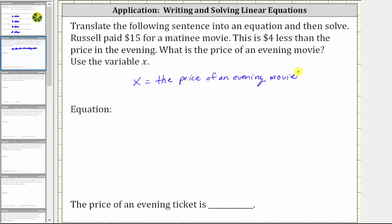Now we want to write an equation that relates the price in the evening to the price of the matinee. Because the price of the matinee is $15, which is $4 less than the price in the evening, if we begin with the price in the evening, which is x dollars, we would have to subtract $4 in order for the price to be equal to the matinee price of $15, which means the equation is x minus four is equal to 15.